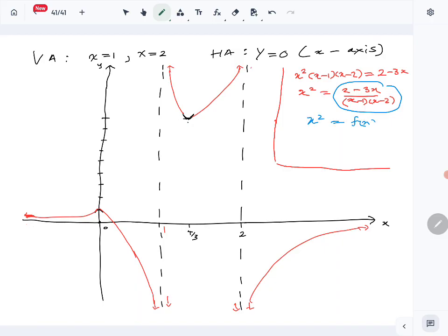So we want to find the solutions of f(x) equals x². Graphically, how do we do that? We plot f(x) and y equals x² on the same set of graphs and find the number of intersection points. We already drew f(x) here. Let's draw y equals x² and observe the number of intersection points.